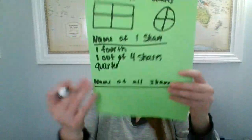If we were talking about the whole shape — what you would name all the shares — that would be a whole, because you have the whole thing. Or it could be four fourths. Or it could be four quarters. Or it could be four out of four shares.